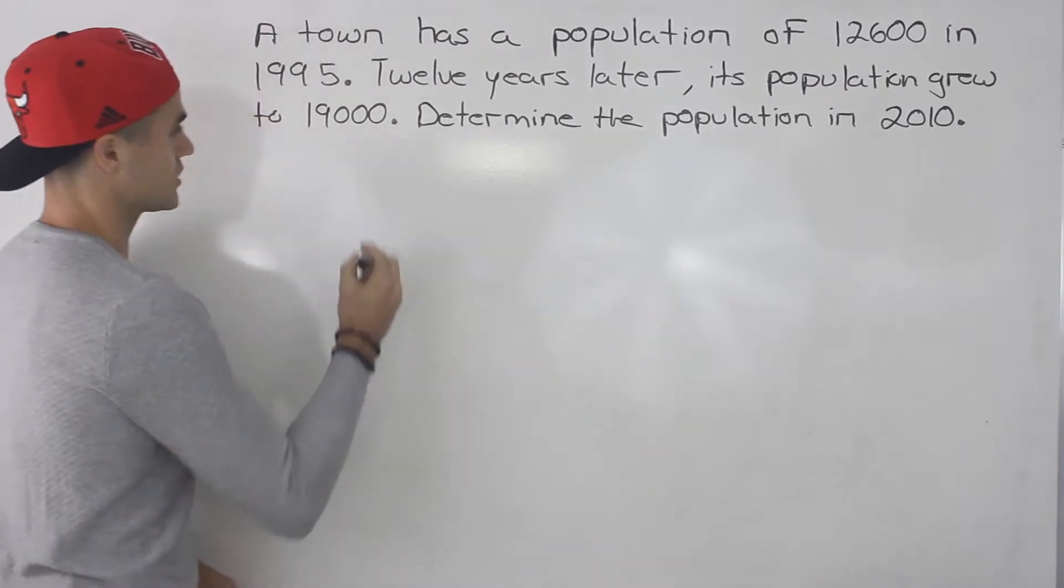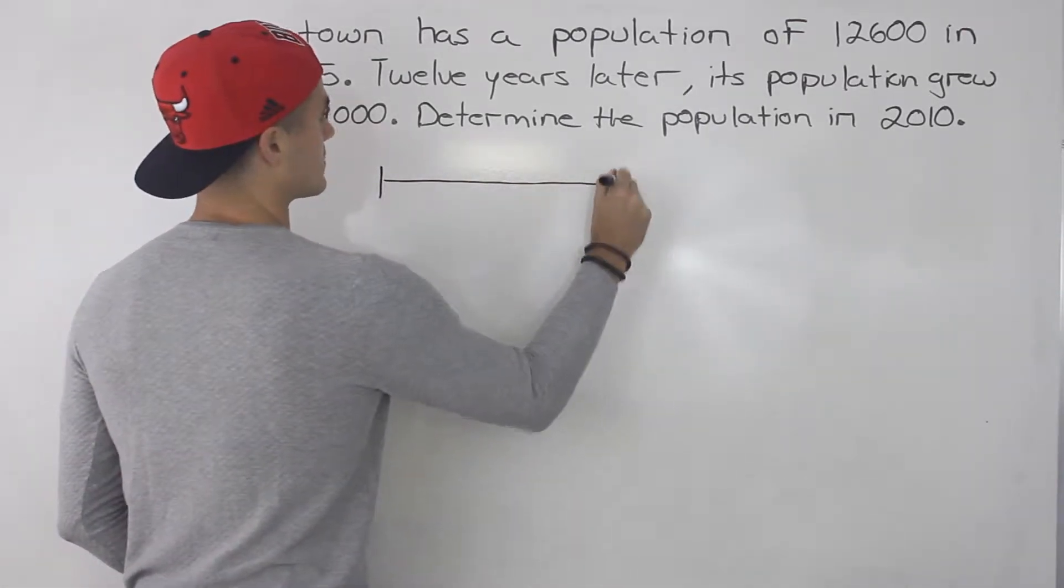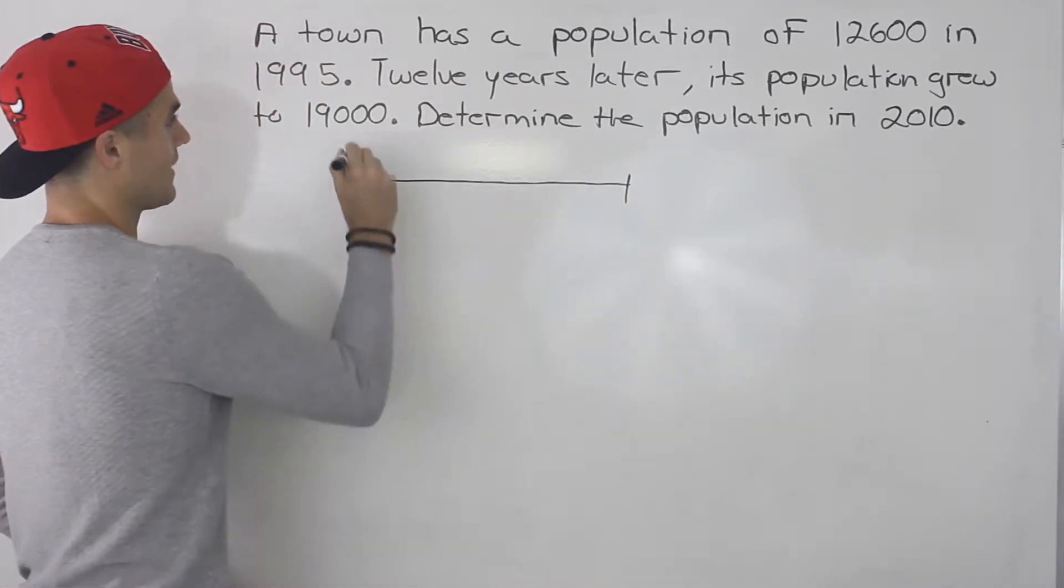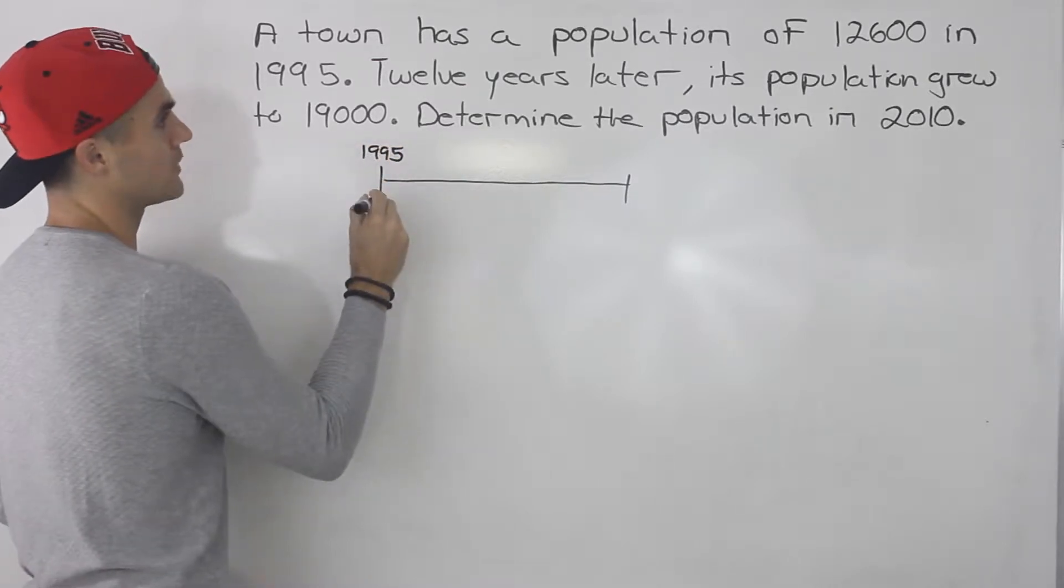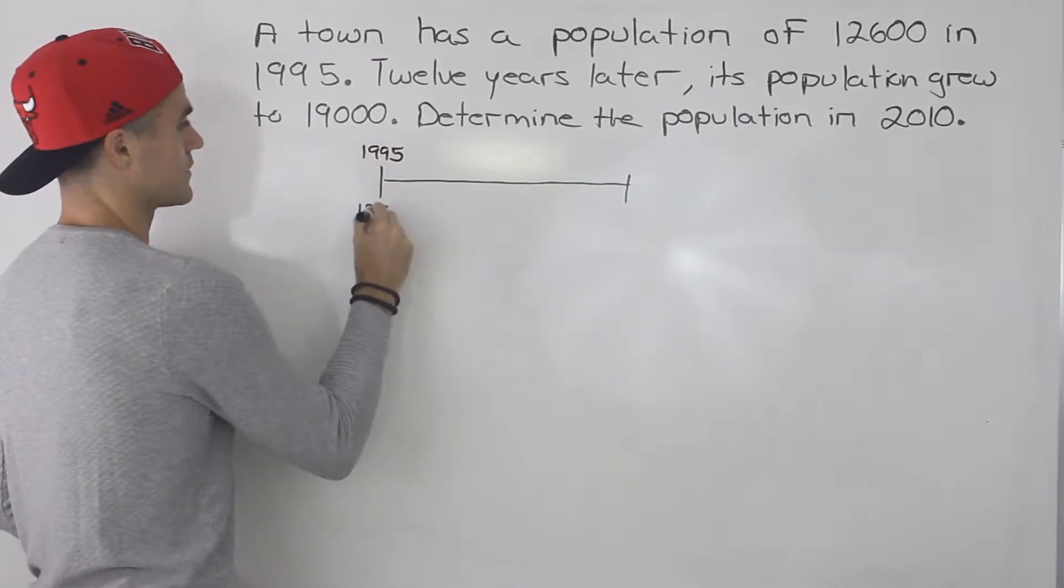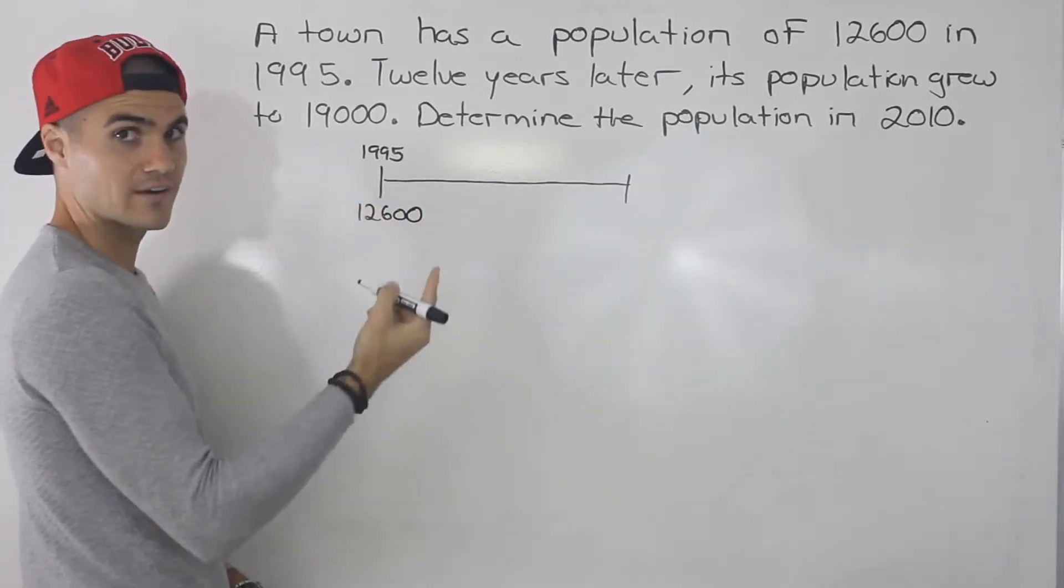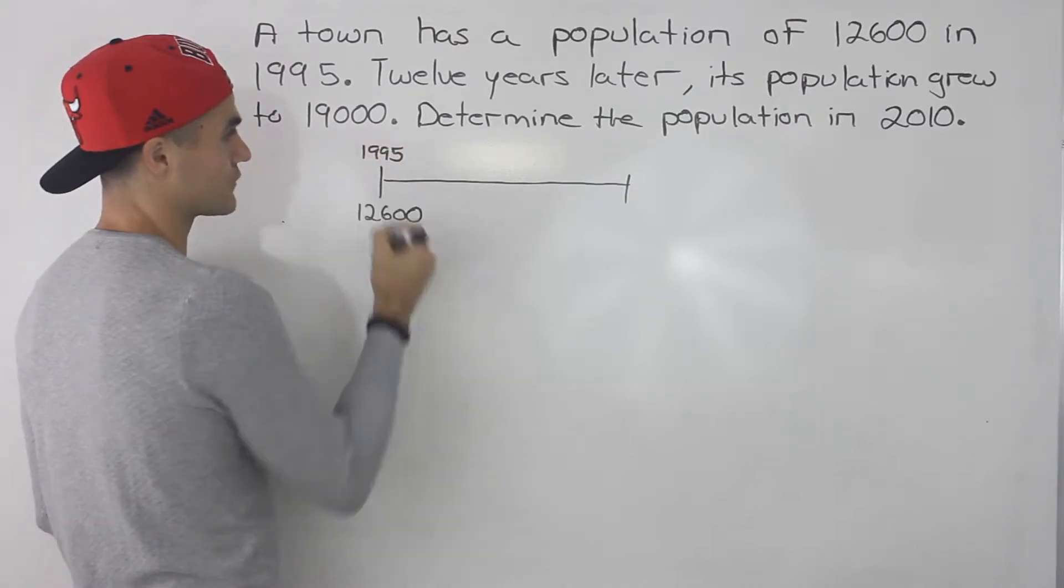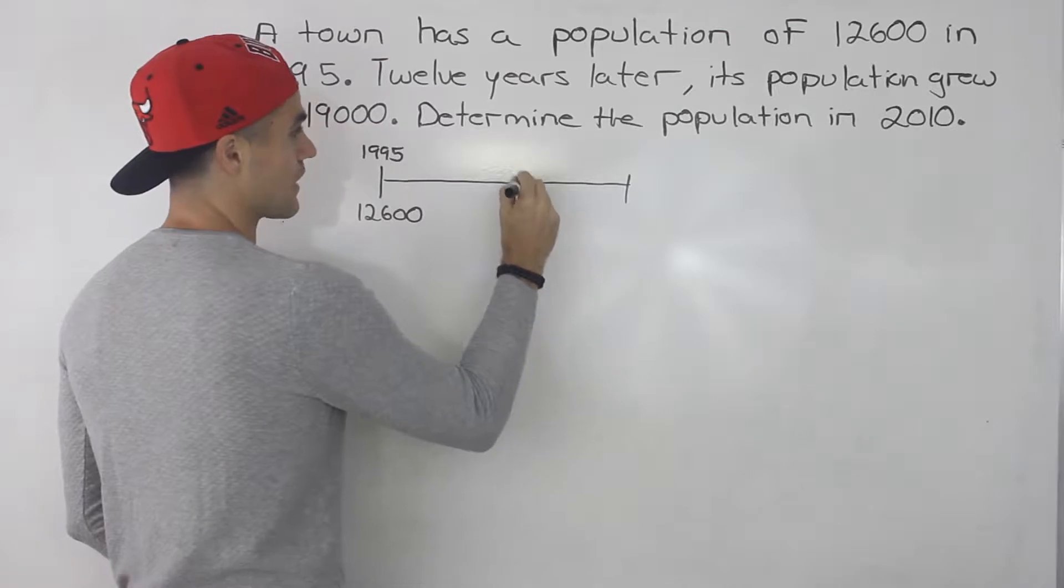So when I get a question like this, first thing I like to do is make a timeline of what is happening. So in 1995, the population we're told is 12,600, and then we're told 12 years later its population is going to be 19,000. So 12 years after 1995, that is 2007.